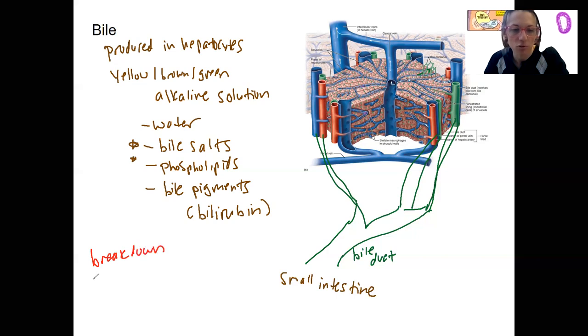The spleen's job is to recycle the blood cells that are old or damaged. Breakdown of our blood cells produces, among other things, bilirubin. Bilirubin is actually a toxin that - by putting it in the bile, we can get rid of it.